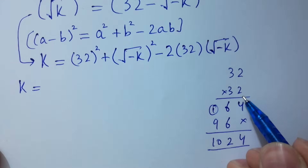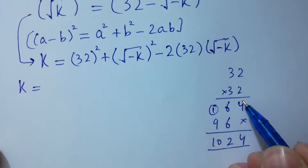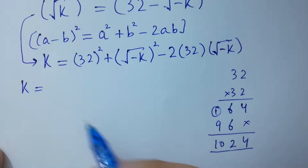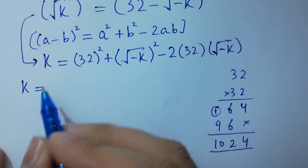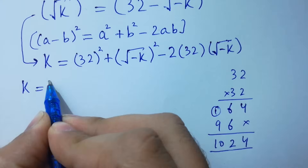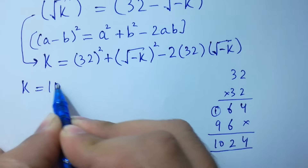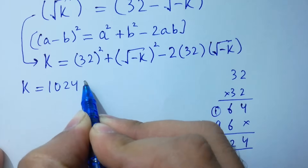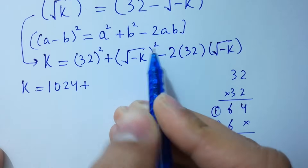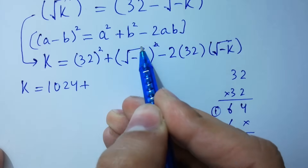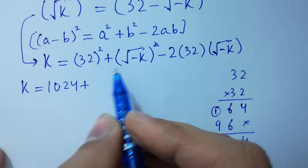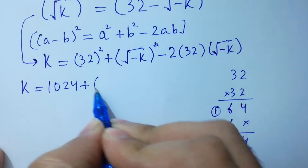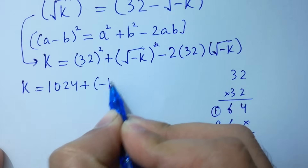32 times 32 equals 1024, and the square will be cancelled from the square root, giving minus k.